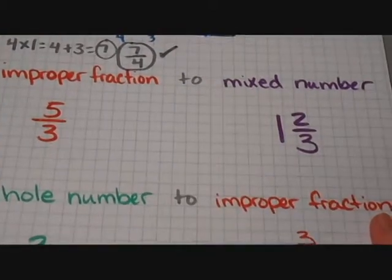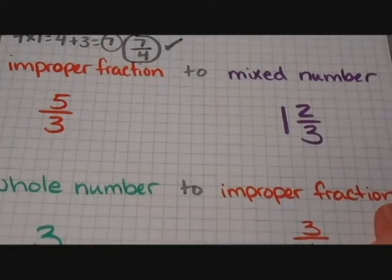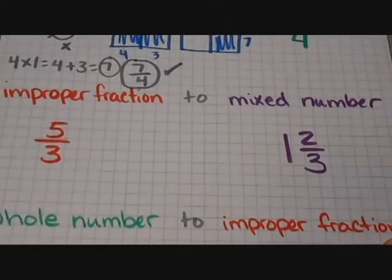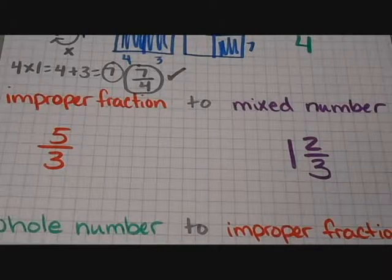Let's go the other way. Let's start with an improper fraction and change it into a mixed number. So I've got five thirds here. Again, let me show you with a picture what that looks like.